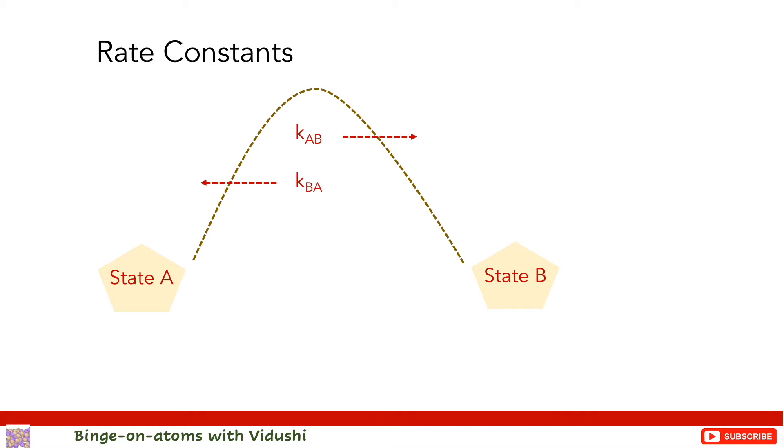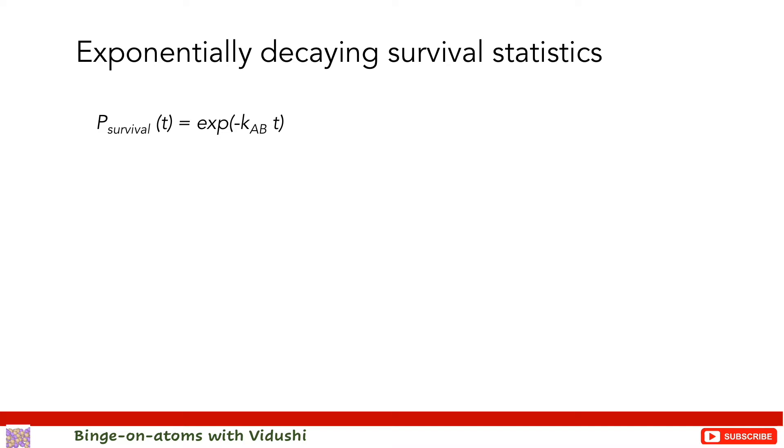As rate constants for this hop from system A to B is KAB inverse seconds, one may think that the average time until this hop occurs is delta TAB equals KAB inverse. So one may assume that in a KMC algorithm after each transition from state A to state B, time would have increased by delta TAB. But this is not correct.